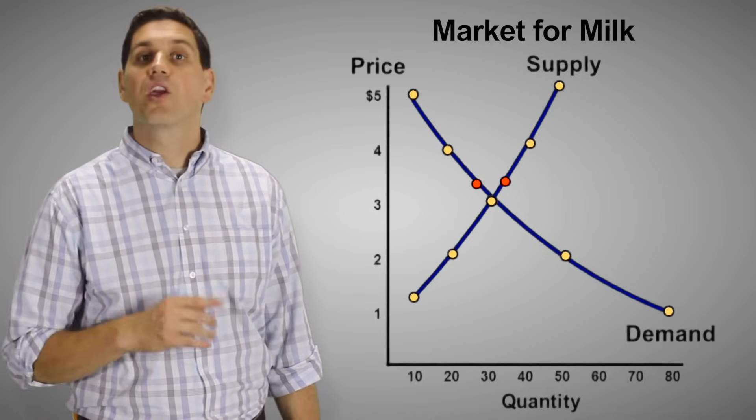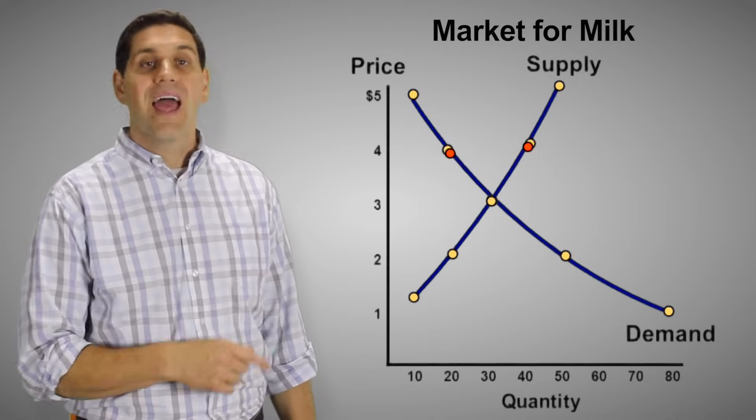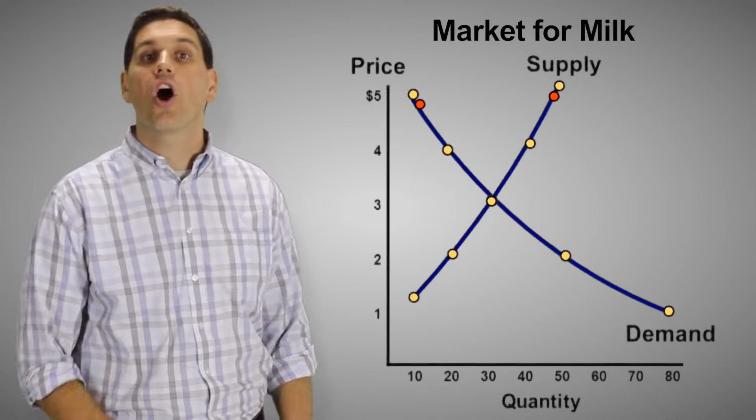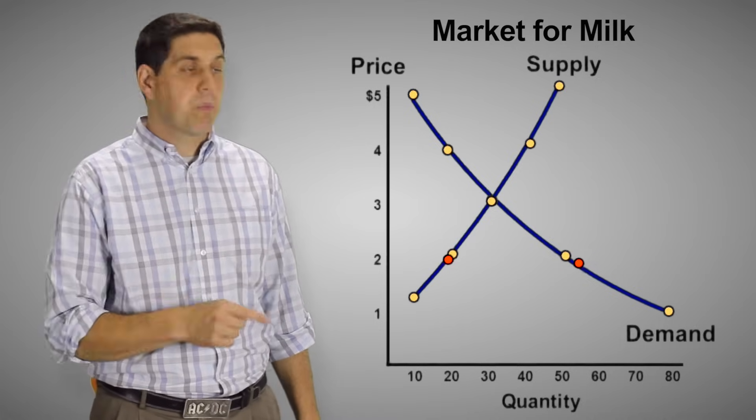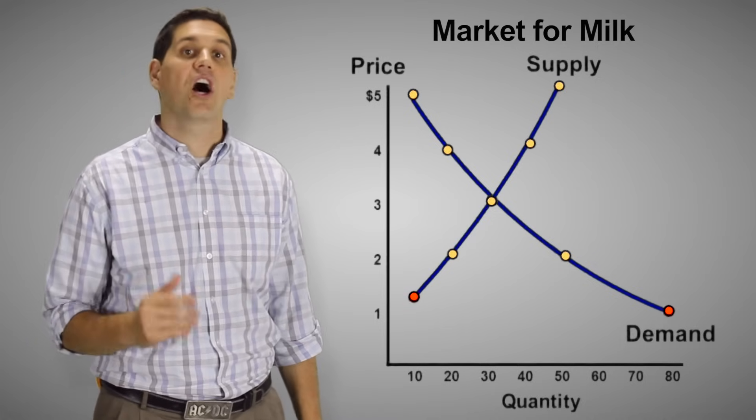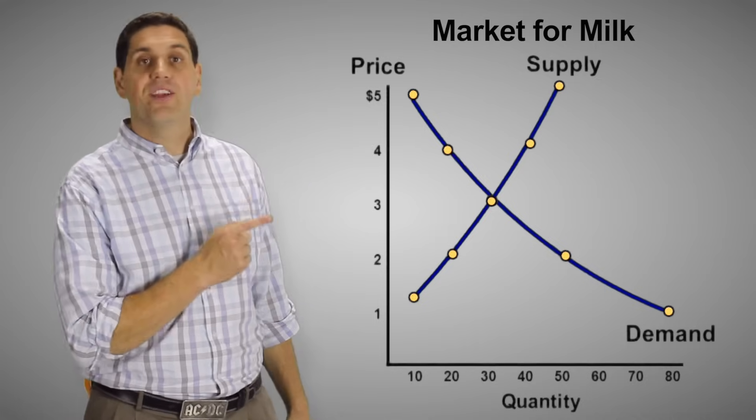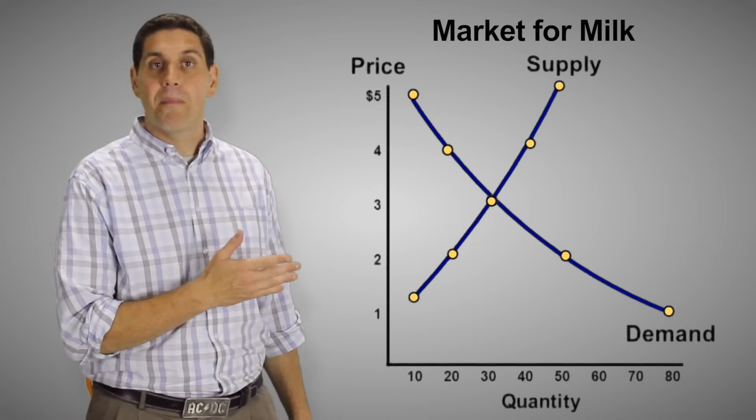For example, when the price goes up, the quantity supplied increases and the quantity demanded decreases causing a surplus. When the price falls below equilibrium, the quantity demanded increases, the quantity supplied decreases, and that causes a shortage. And that's what happens when there's a change in price. It moves along the demand and supply curves.